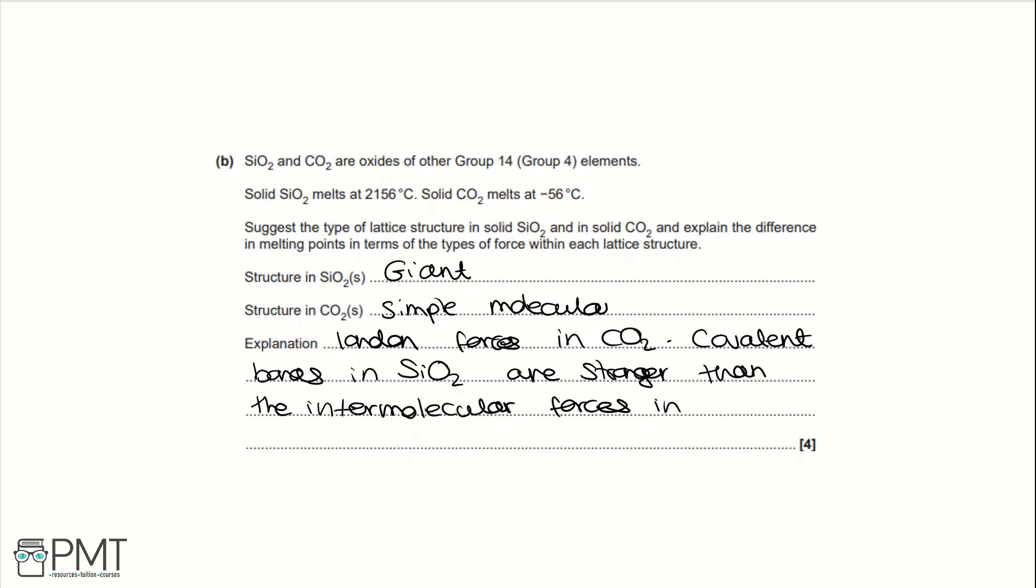So to get the marks for this question, you get a mark for each correct structure. So giant and simple molecular. This gets you two marks, one for each. And then you get a mark for saying that there are London forces in CO2, and that the covalent bonds in SiO2 are stronger than the intermolecular forces in CO2. This gets you your fourth and final mark. So where the bullet point is, each other bullet point is a mark.